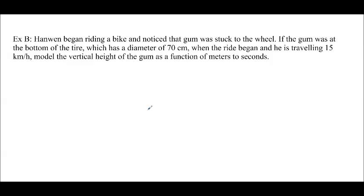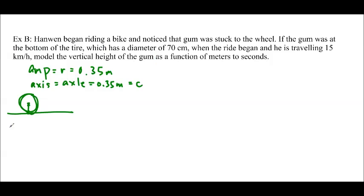So let's look at this question. Hahnemann began riding a bike and noticed that gum was stuck to the wheel. So if the gum was at the bottom of the tire, which has a diameter of 70 centimeters when the ride began, and he is traveling 15 kilometers per hour, model the vertical height of the gum as a function of meters to seconds. So the first thing we can do is find the amplitude. We know the amplitude is equal to the radius of a wheel. So that's going to be 0.35 meters. And we know that the axis is going to be equal to wherever the axle is mounted. And because we know that it is a bike wheel and he's traveling on the ground, in theory, then his axle is going to be mounted exactly one radius away from the ground. So it's also equal to 0.35 meters, which is our c. It also tells us that the gum was at the bottom of the tire when it started. So that tells us it's at the bottom of the tire that's the minimum. So we're going to be using negative cos, and we won't have any phase shift.